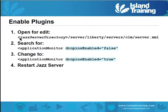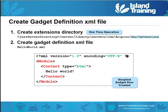Enabling your plugins — I'm assuming you're using the Liberty server. If you're using WAS or an older version with Tomcat, this path would be different. Find the server XML file — it's a very short file — open it up and change drop-ins enabled from false to true. You now have the ability to add additional widgets to your server.